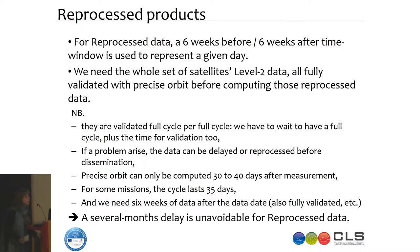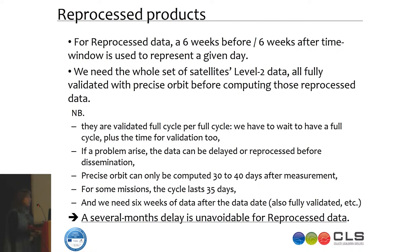The reprocessed products use a centred window with six weeks of data before and six weeks after the measurement date. This uses along-track data from both the past and future to produce each map. However, this requires the full set of Level 2 satellite data, fully validated with precise orbits. As a result, reprocessed data cannot be provided until several months after the measurement date, as all processing, quality control, and precise orbit determination require time.